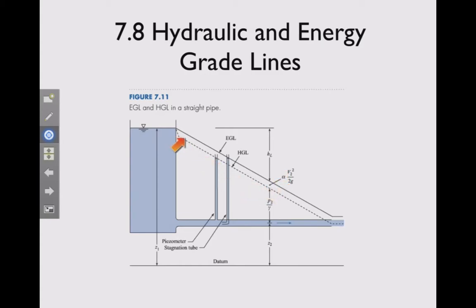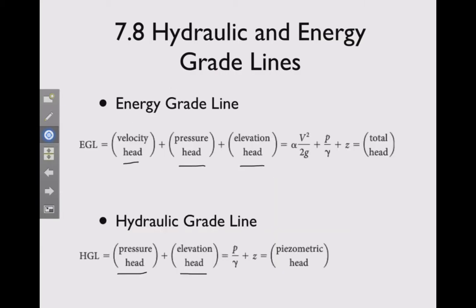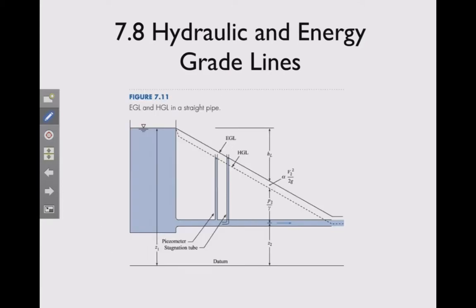And we have the velocity head term of alpha times V2 at some point 2 squared over 2g. And so there's a difference now between the energy grade line and the hydraulic grade line because the difference between them is the velocity head. If you remember from the previous definition, the only difference here is this term right here. So if you compare the energy grade line and the hydraulic grade line, they're going to differ by that velocity head. And there it is. There's the term right there.